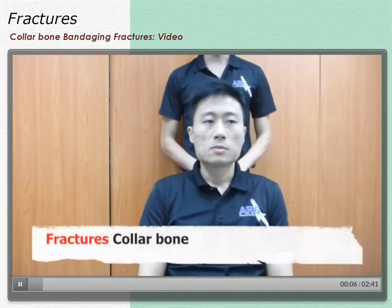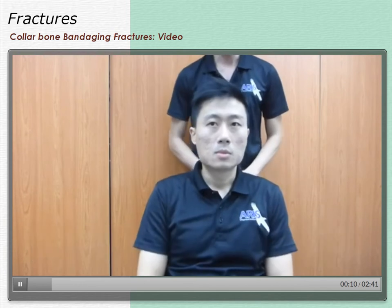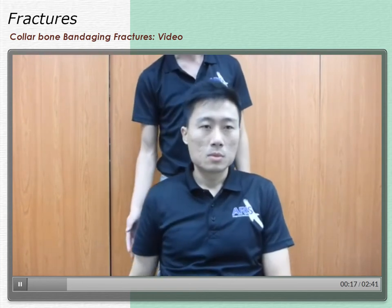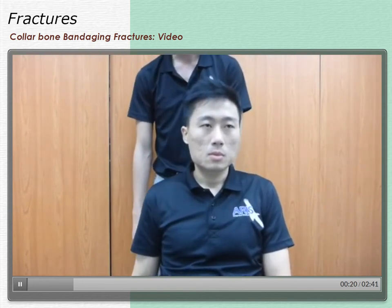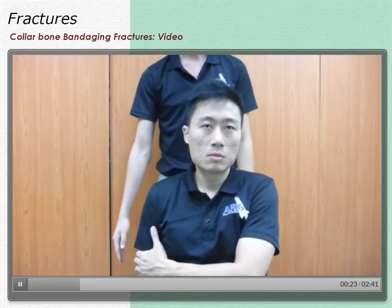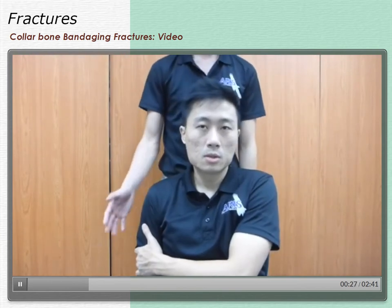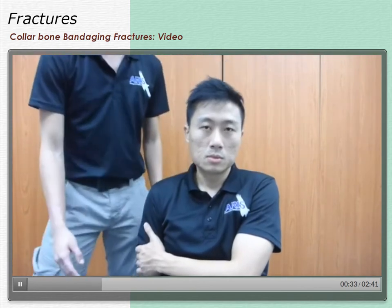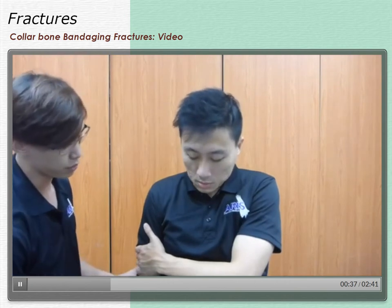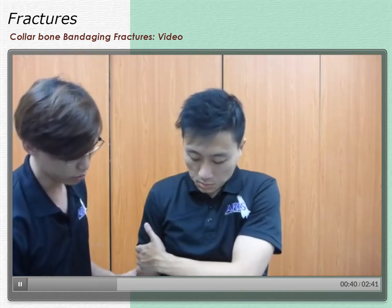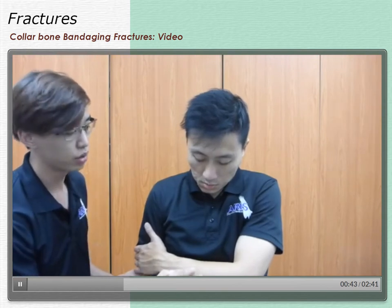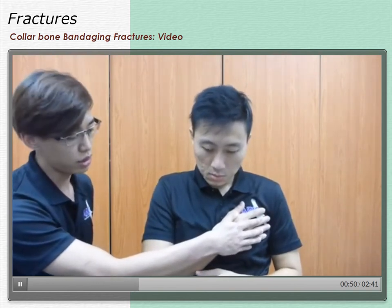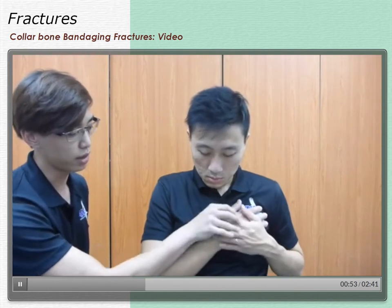Today we're going to cover a collarbone fracture. If your casualty has a right collarbone fracture, he will let his hand hang loose at one side. Try to prevent movement by holding onto his hand. You need to gently move the arm from this hanging position into a resting position. First, tell the casualty what you want to do — slowly bend only the elbow to move the arm into position. Then get the casualty to use the left hand to hold onto the right arm.